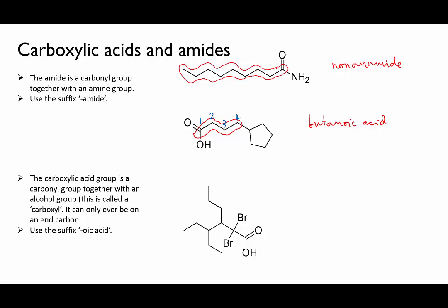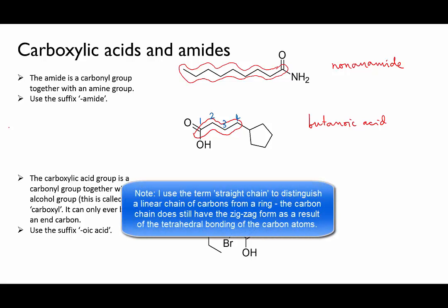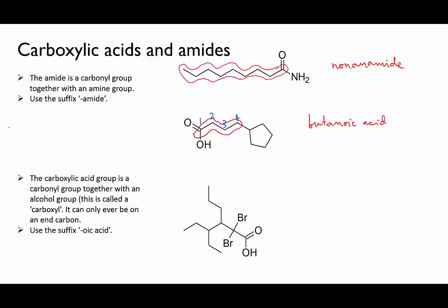Now what about the ring? We just treat it as a substituent because it's attached to the end carbon of the main chain. Note that this ring with five carbons is actually longer than the four-carbon straight chain that we've called the main chain, but it is the straight chain that's designated the main chain because it includes the functional group. So our five-carbon ring is cyclopentane, but since it's a substituent we'll call it cyclopentyl, and it's attached to carbon number four, numbering from the end with the functional group. So the complete name is 4-cyclopentylbutanoic acid.